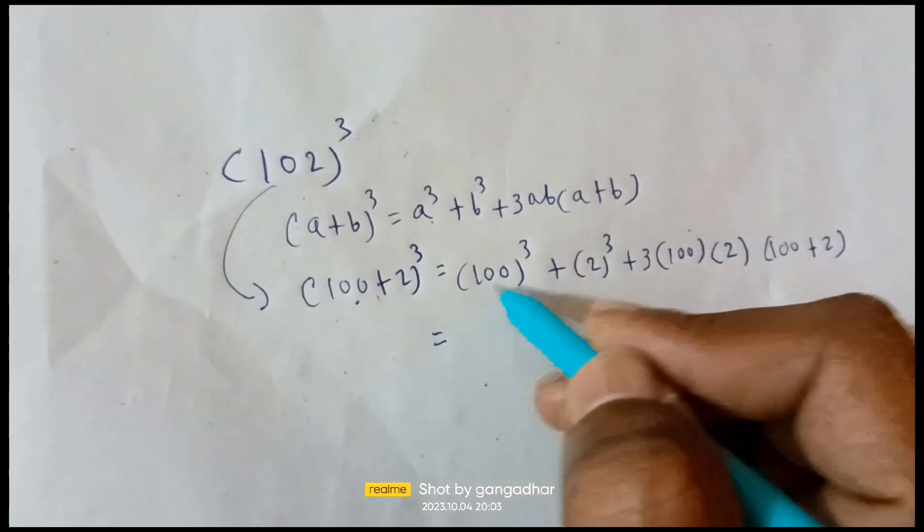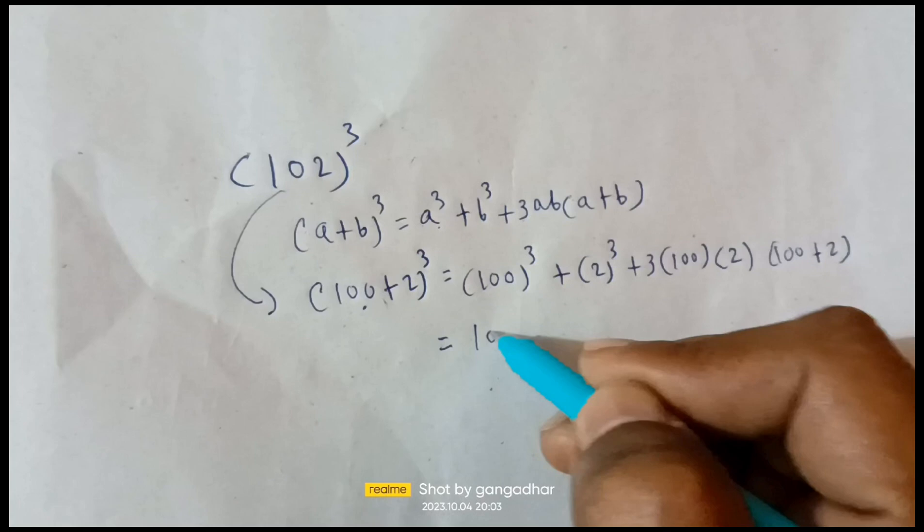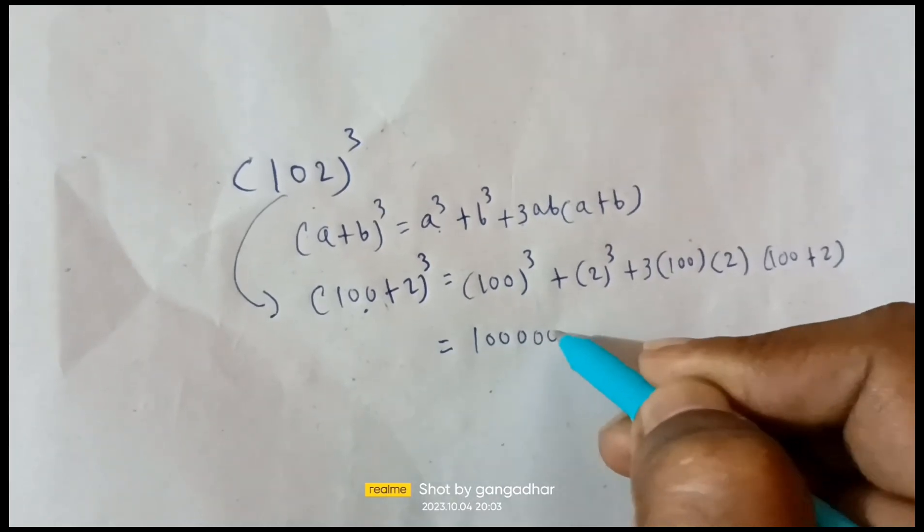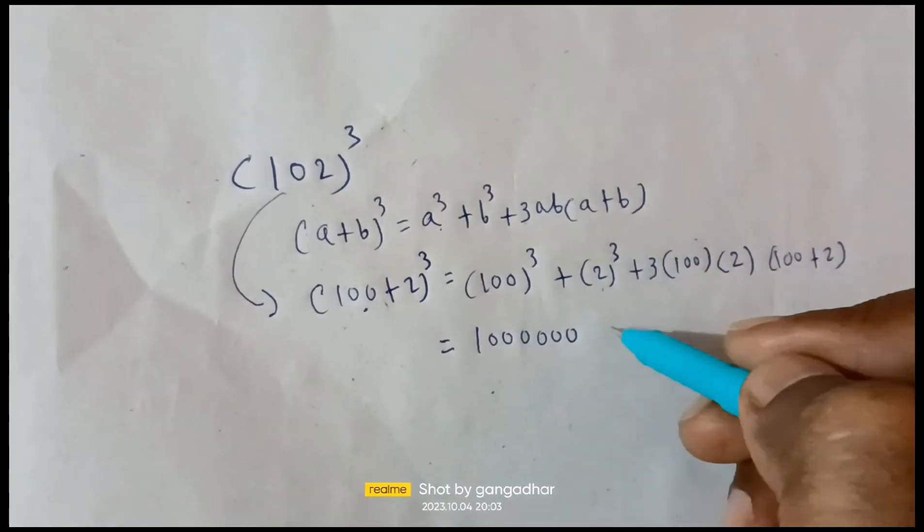100³ means one million - 1000000, six zeros. Plus 2³ means 8.